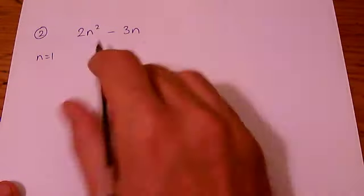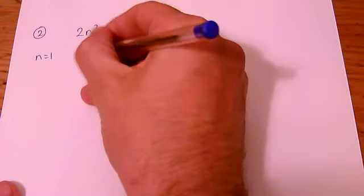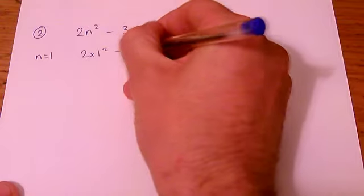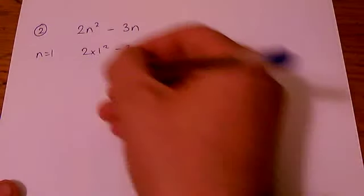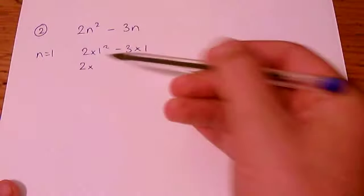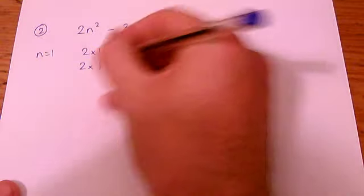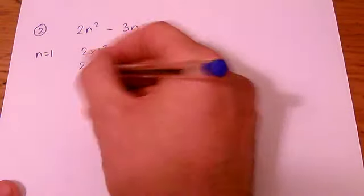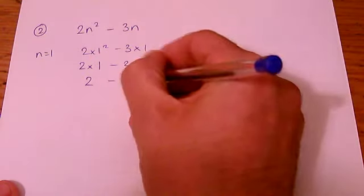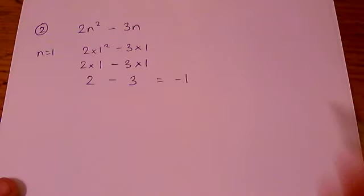So let's try what happens when n equals 1. You get 2 times 1 squared minus 3 times 1. That 1 squared we know stands for 1. And then if you work these out you get 2 minus 3 which is minus 1.